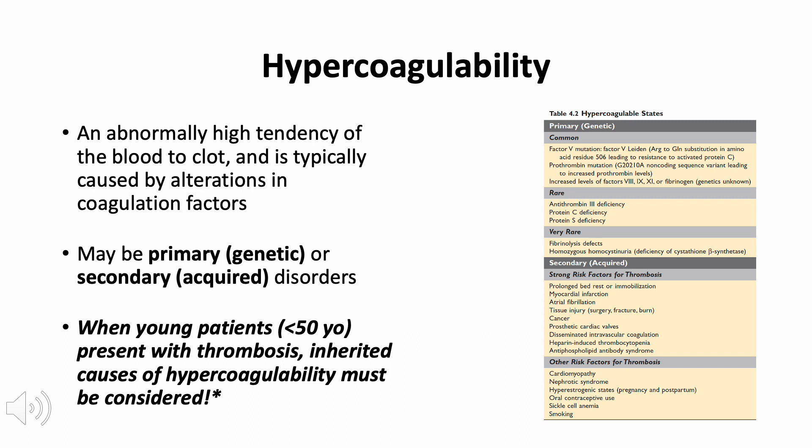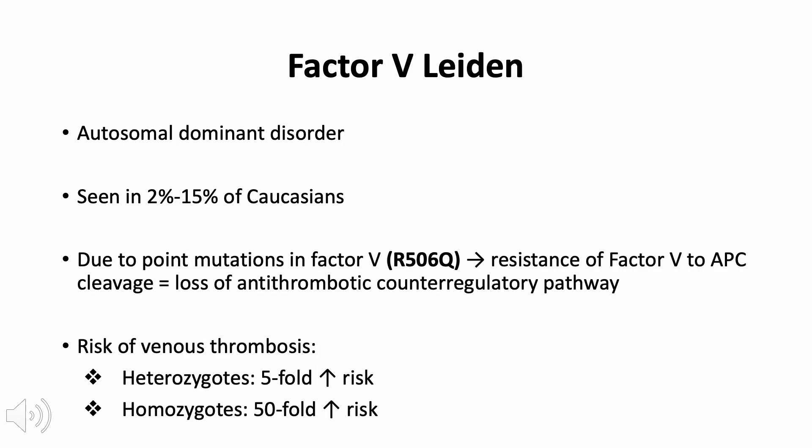The third component of Virchow's triad is hypercoagulability - an abnormally high tendency of the blood to clot caused by alterations in coagulation factors. Hypercoagulability plays a particularly important role in venous thrombosis and can be divided into primary (genetic) or secondary (acquired) disorders, where the latter are frequently multifactorial.